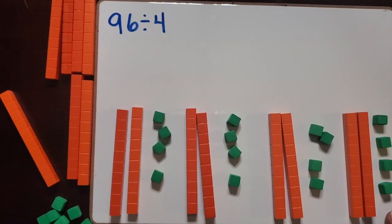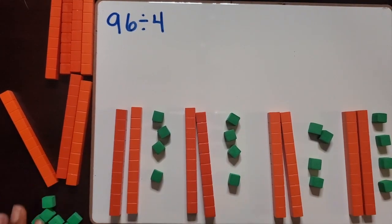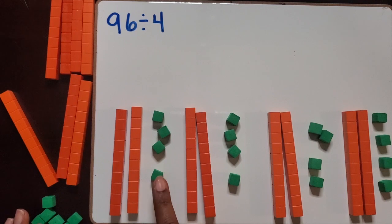So as you can see here, each of the groups got the same amount. Each group has two tens and four ones.